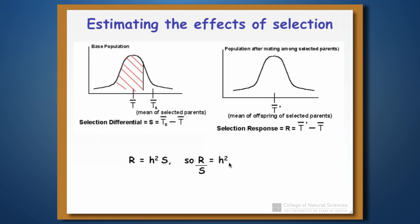The value of knowing the narrow sense heritability is that if we know the selection differential in the population, we can predict what the response to selection is going to be. That's really valuable.